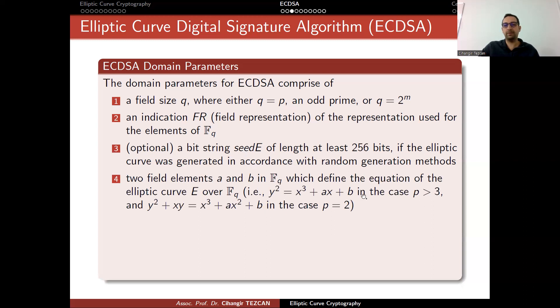Recall that we define the elliptic curve like this. A and B actually define our elliptic curve when the P is odd prime, but if we focus on Q equals to 2 to the M case, then the definition of the elliptic curve is somewhat different. As you can see, we don't have plus XY here, but in this scenario we have, and here it is AX squared, here it is AX. The definition of the elliptic curve depends on the field you are working on.